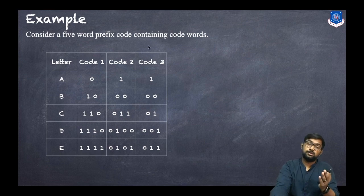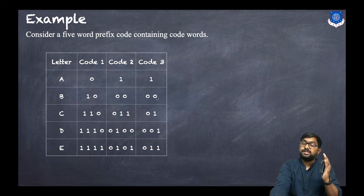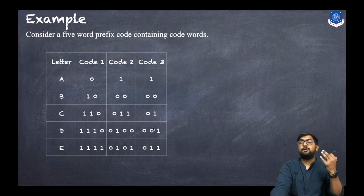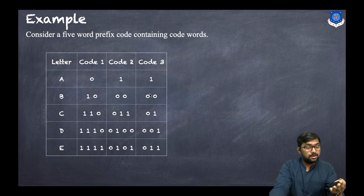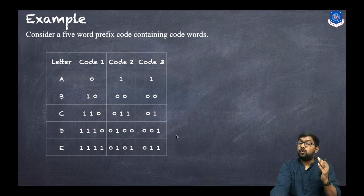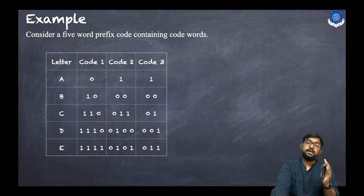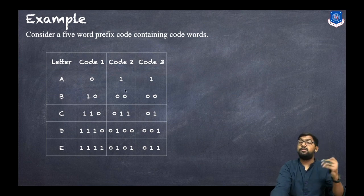Consider code three: a is assigned '1', b is assigned '00', c is assigned '01'. For d, the proposed code '001' is not valid because '00' is already assigned to b and it is a prefix of '001'. For e, '011' is not valid because '01' is already assigned to c. So code three is not a valid prefix code. For codes one and two you can verify that each code is distinct and no code is a prefix of another.